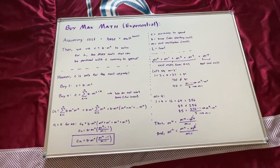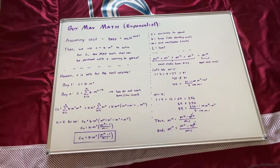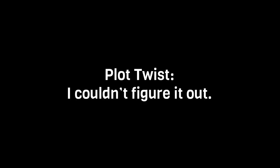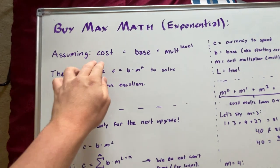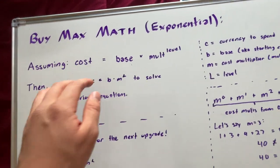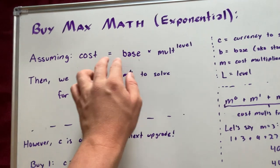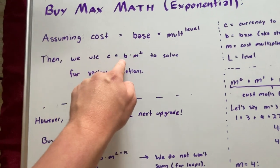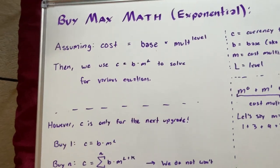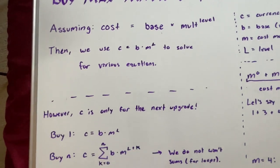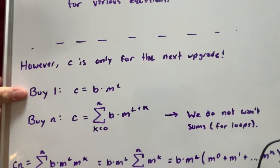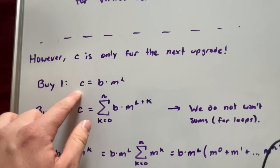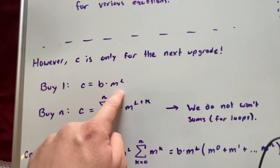The first one we're talking about is the exponential equation. Assuming that our cost is equal to this exponential equation, which in our case it will be, cost equals base times multiplier to the power of level. If we're buying just one upgrade at a time, then our equation is simple: our cost is going to be b times m to the power of l.